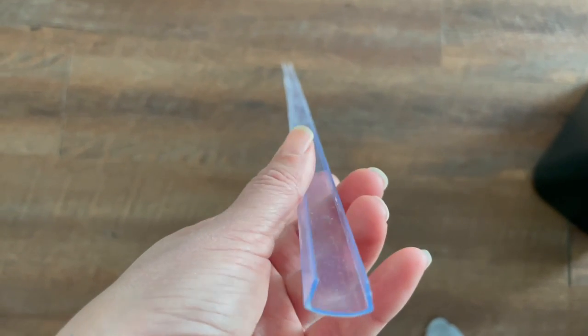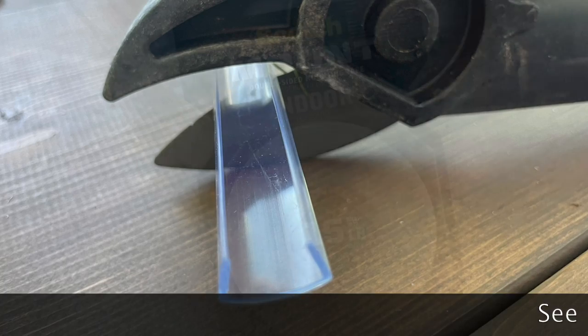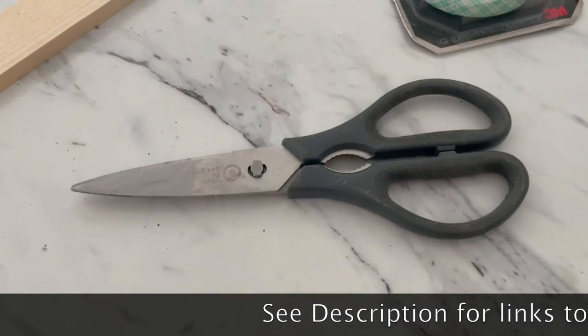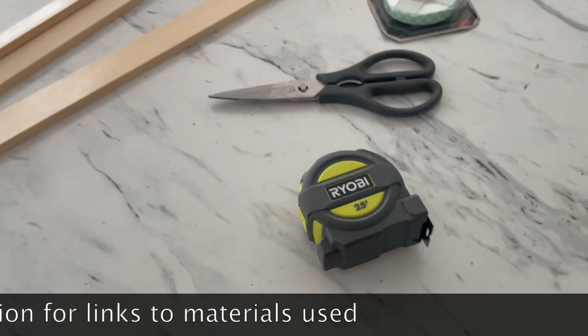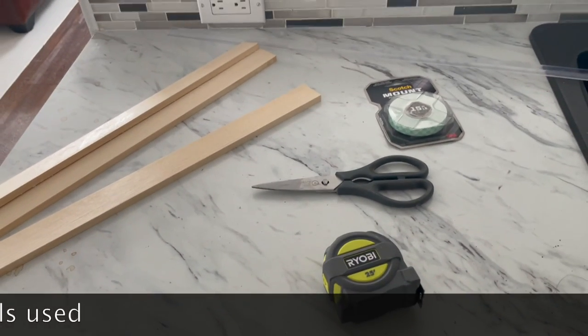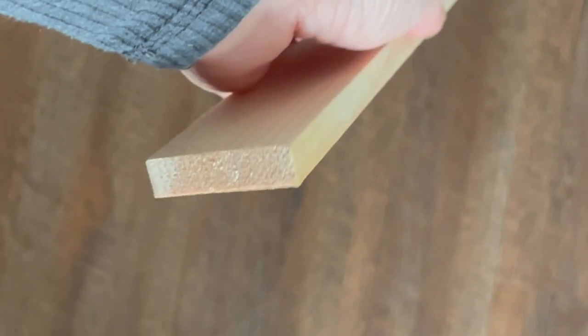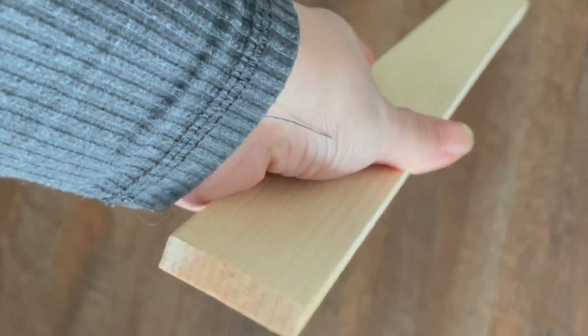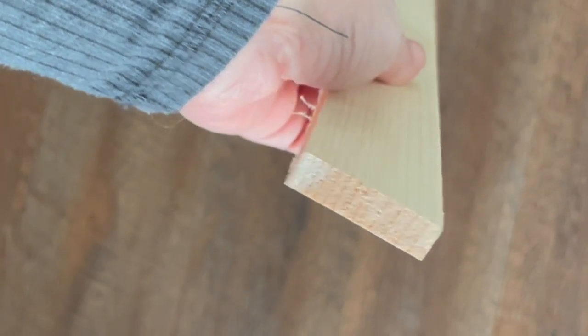For supplies, you'll need C-channel that's available at Amazon, some pruning shears, mounting tape, scissors, a measuring tape, and of course, the wood material for dividing out your drawers. I use this 1/2-inch thick wood that's available at Lowe's or Menards.